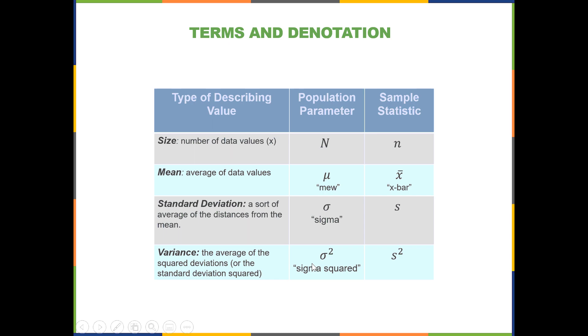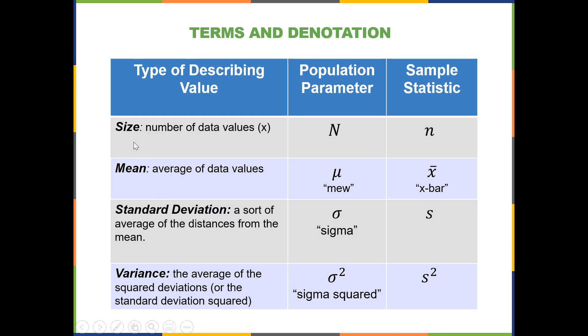Before we get into the mathematical formula, let's review some of the symbols we're going to see. We have types of describing values listed: the size or number of data values, the mean or average of data values, the standard deviation which is a sort of average of the distances from the mean, and the variance which is the average of the squared deviations, or the standard deviation squared.